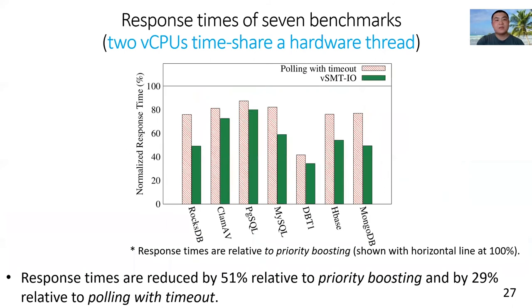This figure shows the normalized response times of seven benchmarks when each hardware thread is timeshared by two VCPUs. On X, we show different benchmarks. On Y, we show normalized response times.